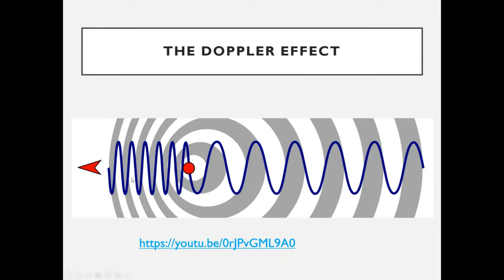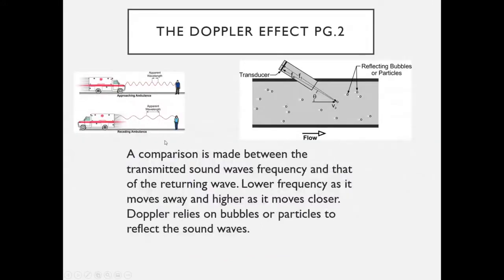The Doppler effect refers to the difference in frequency of sound waves as something approaches you versus leaves you. If you think about a train, you can distinguish the sound as it approaches versus as it leaves. Similarly, an approaching ambulance has a higher frequency wavelength as it comes toward you, and as it leaves, that apparent wavelength seems longer — lower frequency. The comparison is made between the frequencies of the transmitted and returning wave.